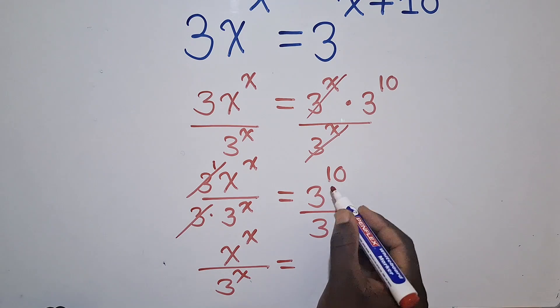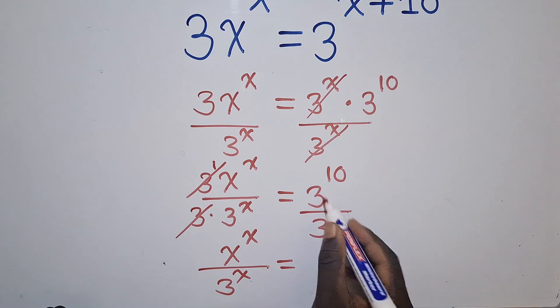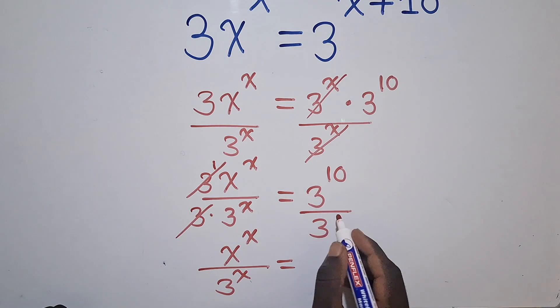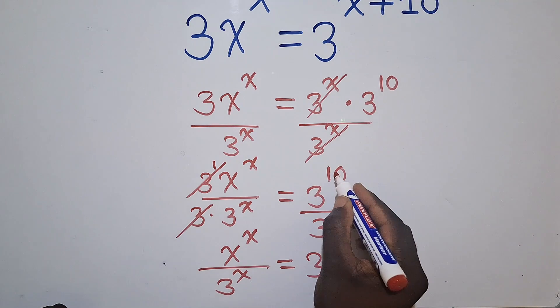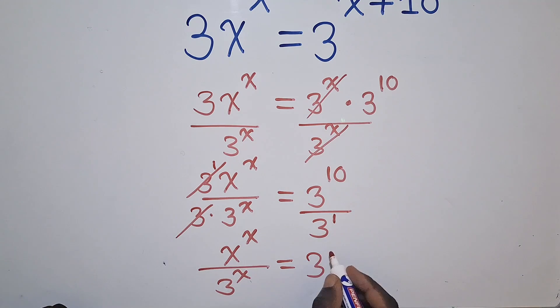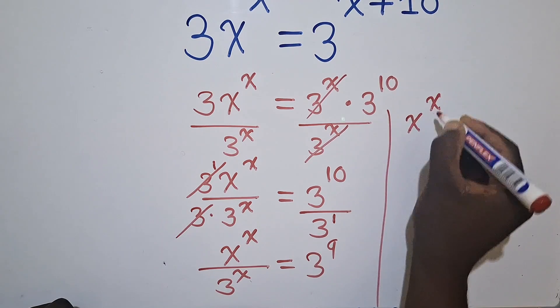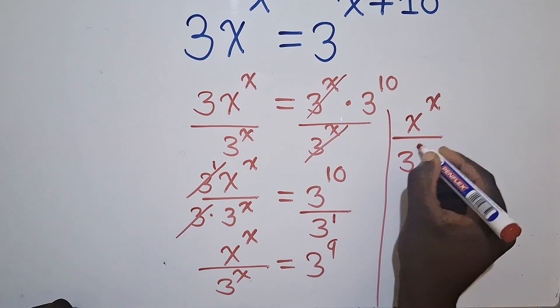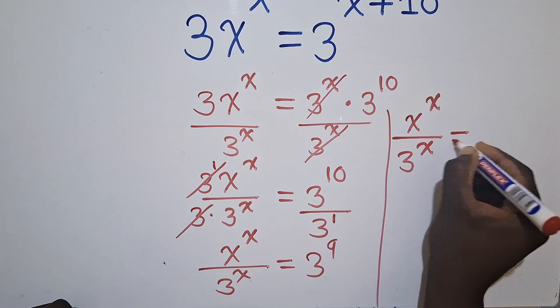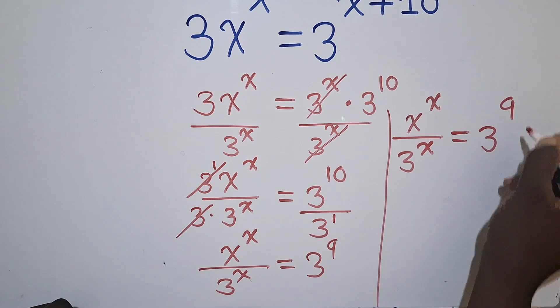Then down here, it will be over 3 power X, which is equal to, here when we divide, same bases, there's a power 1 here, meaning it will be this same base. And then to the powers, it will be 10 minus 1, which will give us a power 9. So you can see what we have. We've got X power X over 3 power X is equal to 3 power 9.